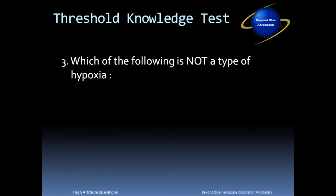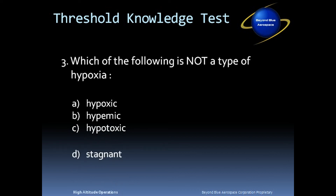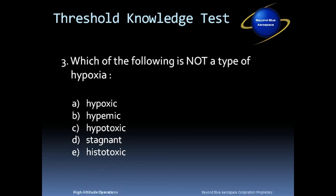Question number three. Which of the following is not a type of hypoxia? A: hypoxic; B: hypemic; C: hypotoxic; D: stagnant; E: histotoxic. The answer is C, hypotoxic.